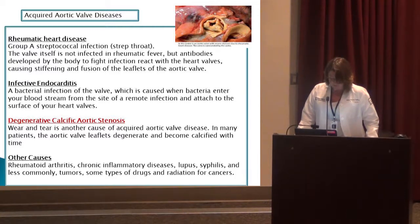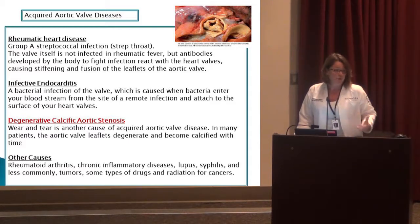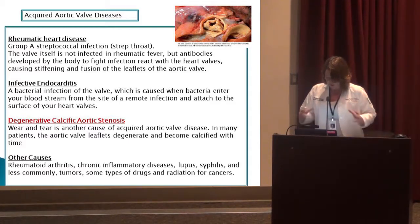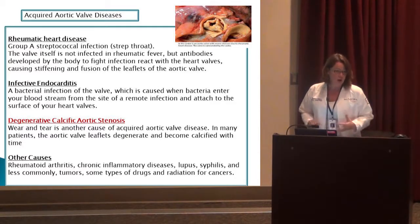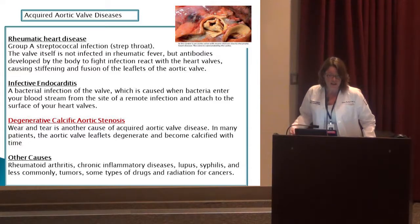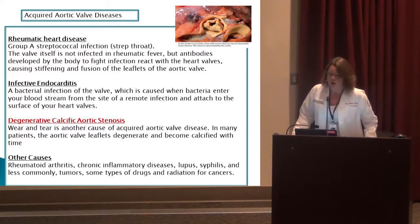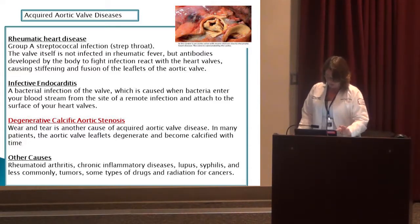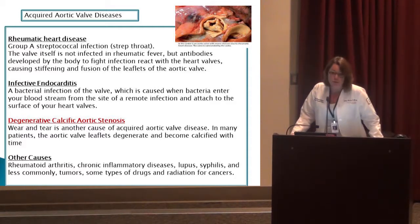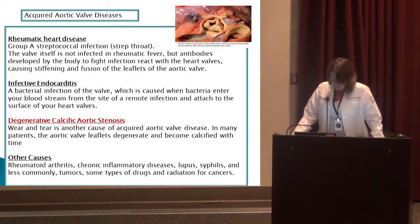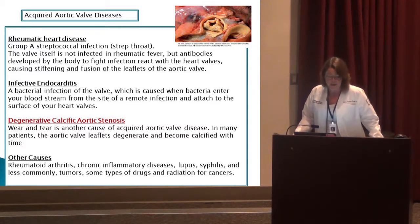The one we're specifically going to focus on is degenerative calcific aortic stenosis, which we deal with in our TAVR patient population. The aortic valve leaflets degenerate and become calcified over time, generally in the seventh, eighth, and ninth decade of life. Other causes include rheumatoid arthritis, inflammatory diseases, lupus, syphilis, less common tumors, some types of drugs, and radiation for cancers.